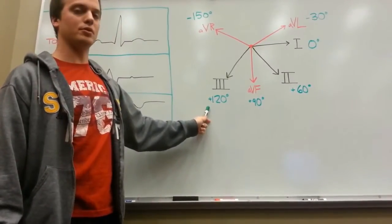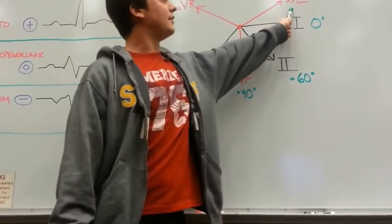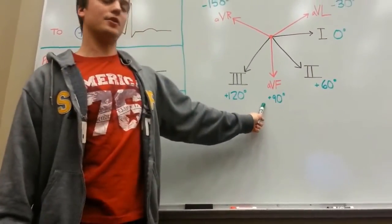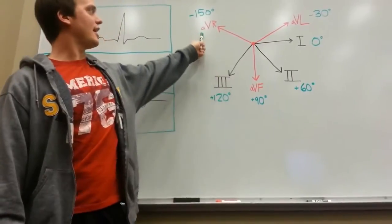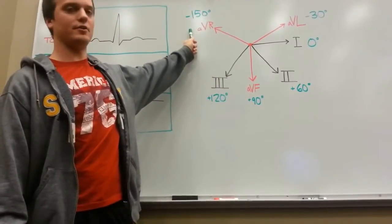And the three unipolar leads: AV left, which is negative 30 degrees, AV frontal, which is positive 90 degrees, and AV right, which is negative 150 degrees.